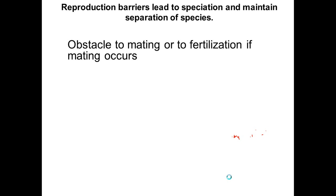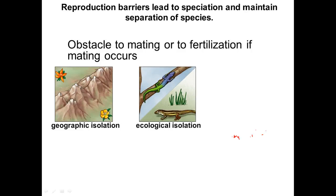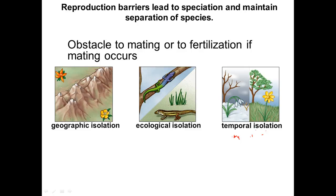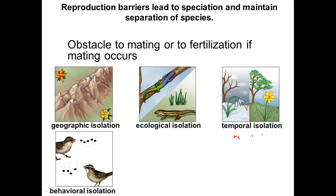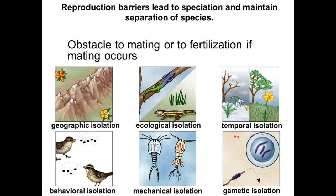Reproductive barriers lead to speciation — these are obstacles that prevent mating or fertilization. Geographic isolation means they physically cannot meet. Ecological isolation means different niches due to competition — for example, one lizard occupies the forest canopy and another occupies the forest floor. Temporal isolation means mating at different times. Behavioral isolation means recognizing different courtship rituals, songs, or calls like frogs make. Mechanical isolation means they physically cannot mate. Gametic isolation means the sperm is prevented from fertilizing the egg.